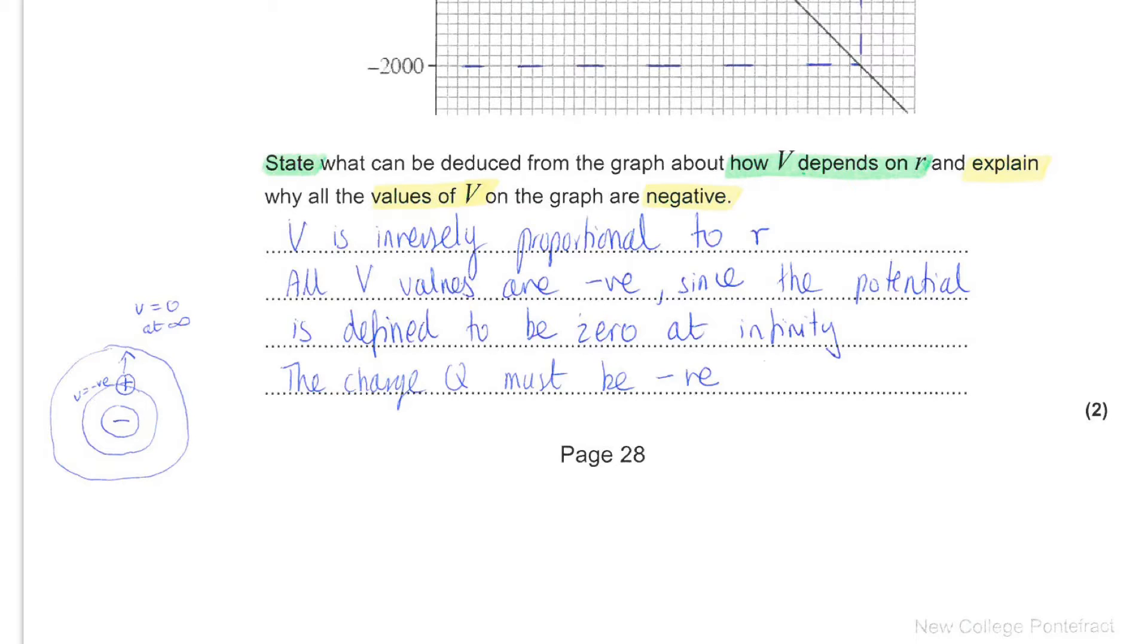So, if this is a negative point charge q, and we consider a positive test charge being moved further away from q, as shown by the arrow here, then it makes sense that you would have to do work against the attraction between these two charges.